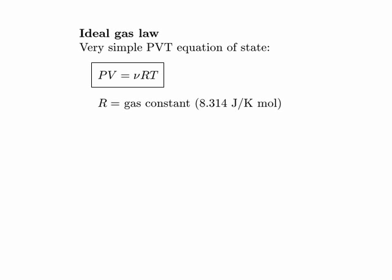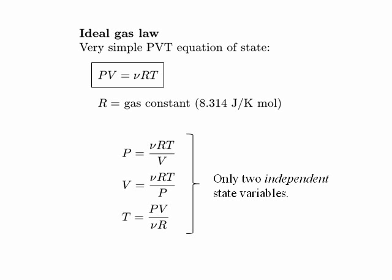With the ideal gas law, if we know any two of the state variables, we can calculate the third. So even though there are three state variables, there are only two independent state variables.